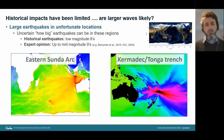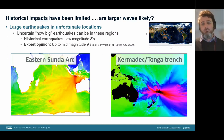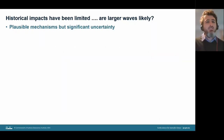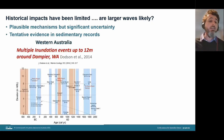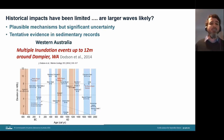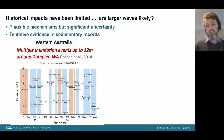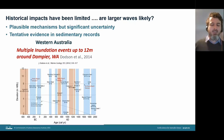We could also generate large events through other mechanisms like landslides or bigger volcanic eruptions. There is tentative evidence in sedimentary records: in Western Australia near Dampier, marine deposits show evidence of multiple inundation events up to 12 meters. Interpretation is not straightforward — storm surges and various tsunami sources could be responsible — but it certainly suggests something significant has occurred.